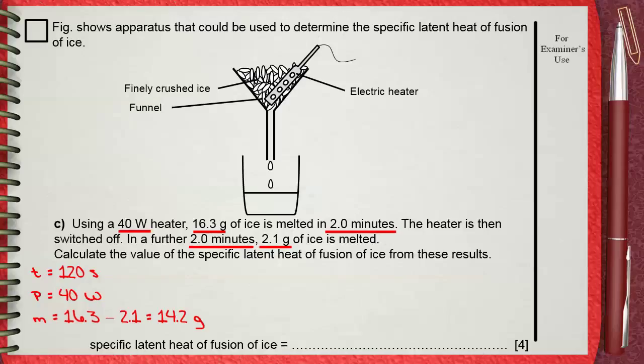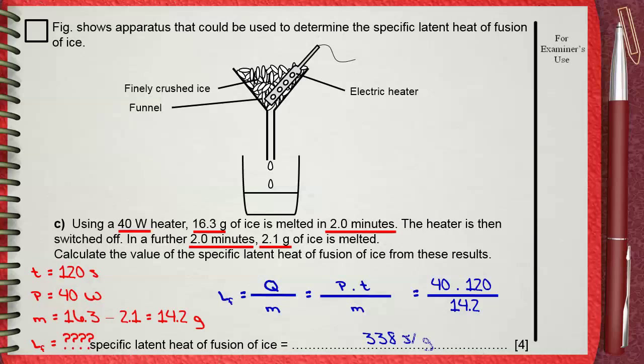He wants you to find LF, the specific latent heat of fusion of ice. LF equals Q divided by M, or it is power multiplied by time divided by M. By substitution, 40 the power times 120 the time divided by 14.2. This gives that the specific latent heat of fusion of ice is 338 joules per gram.